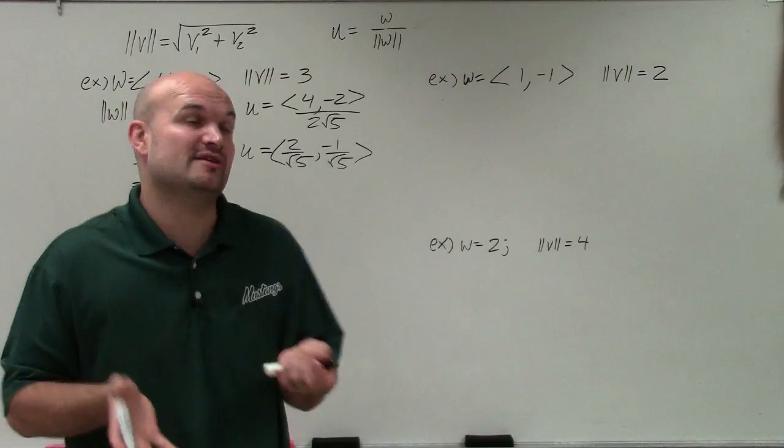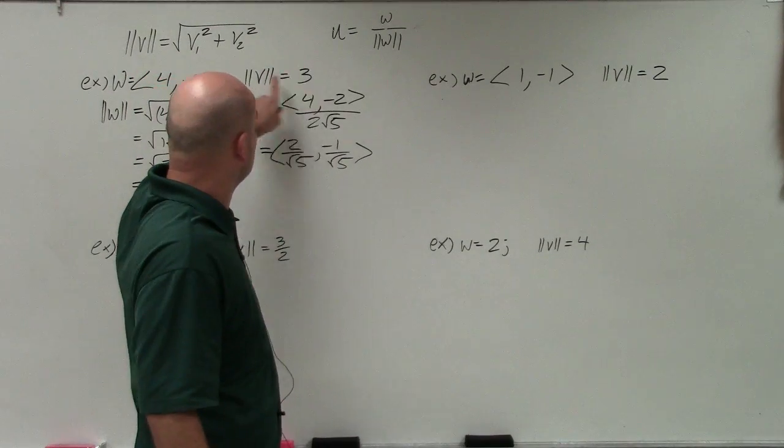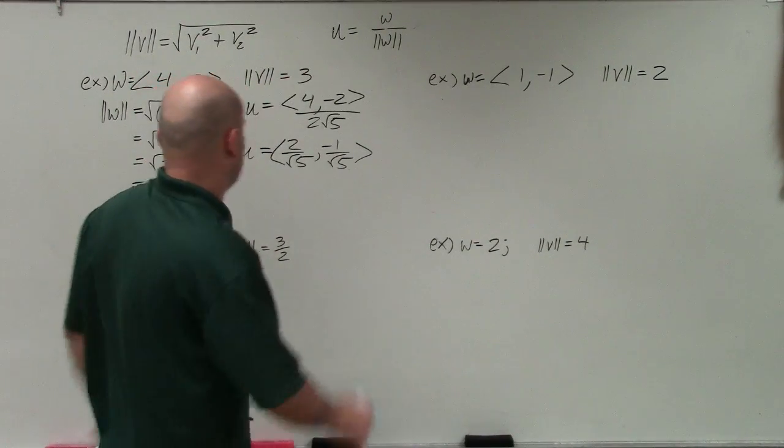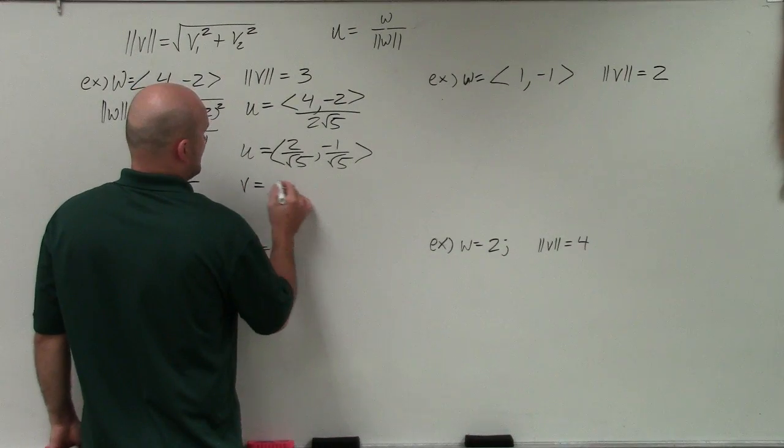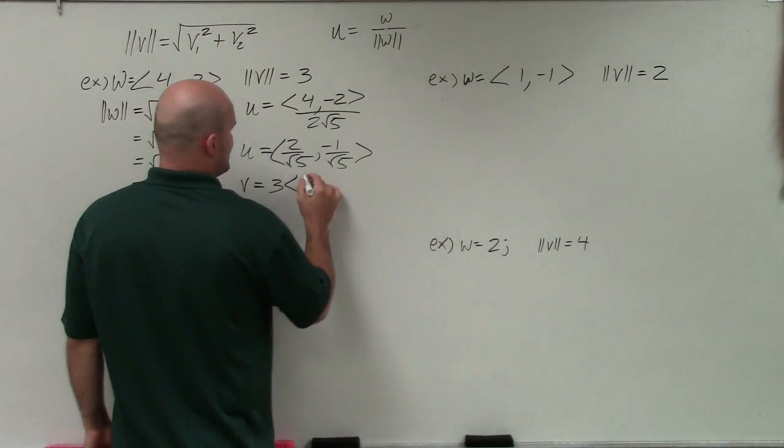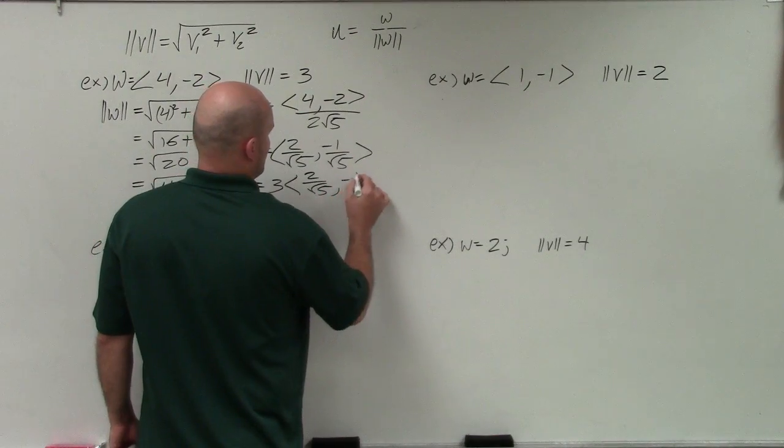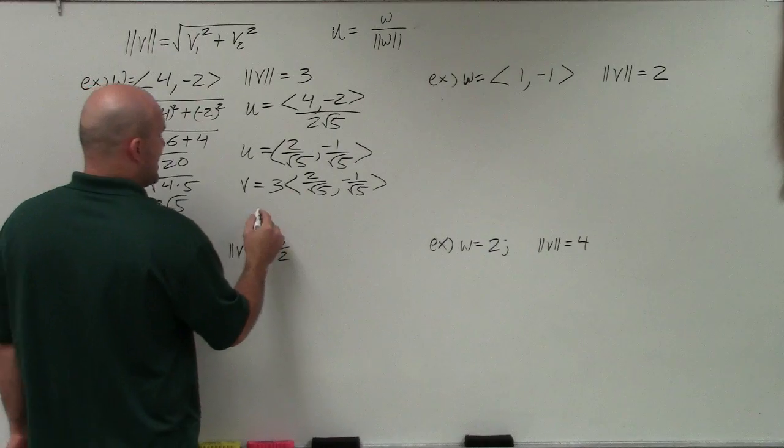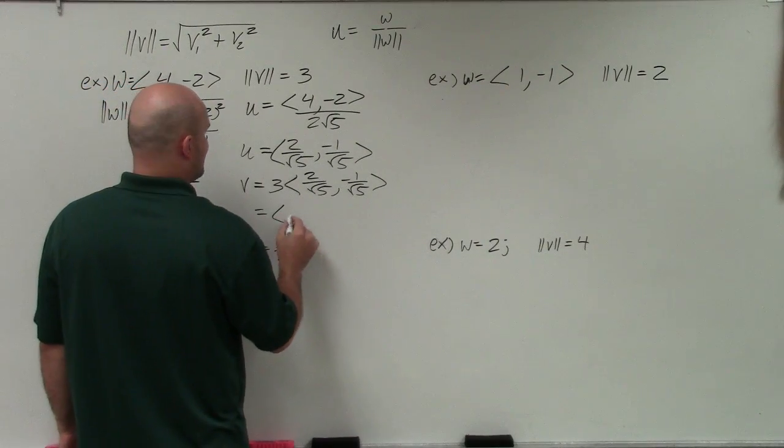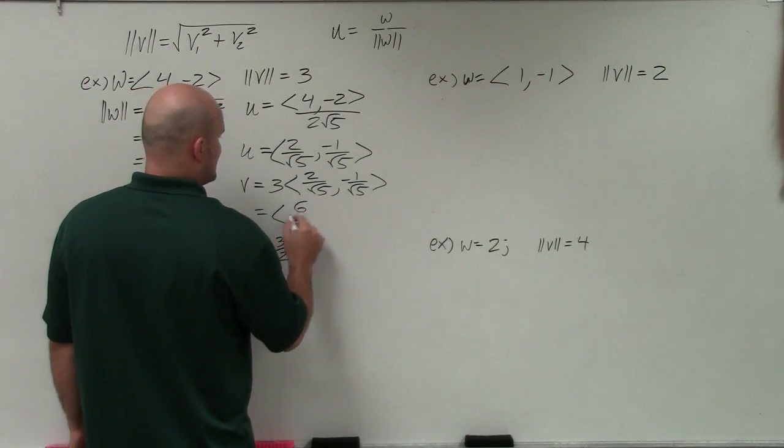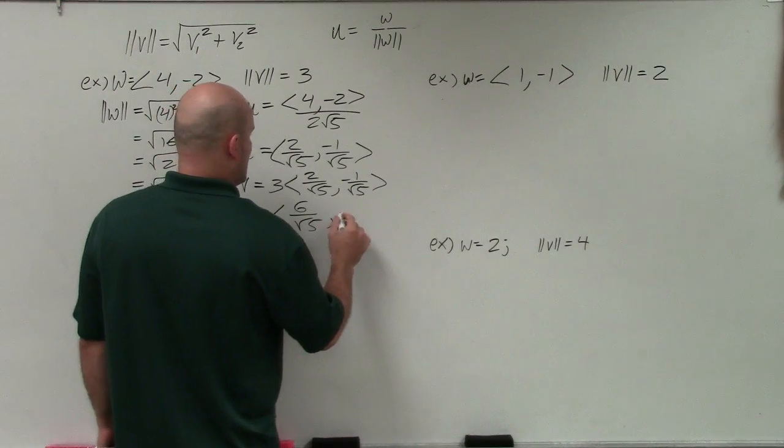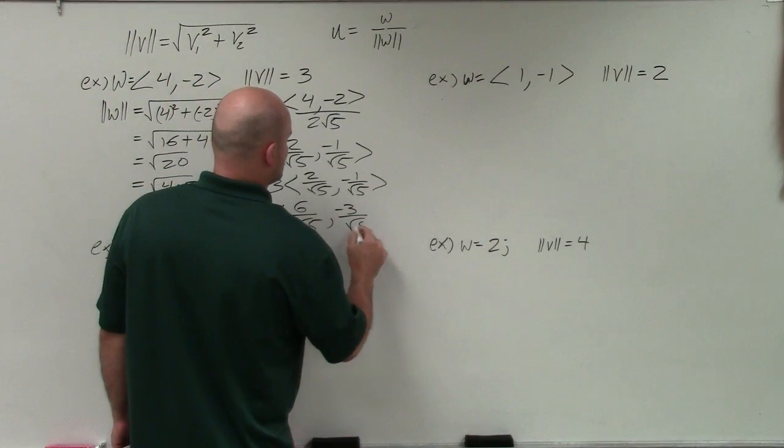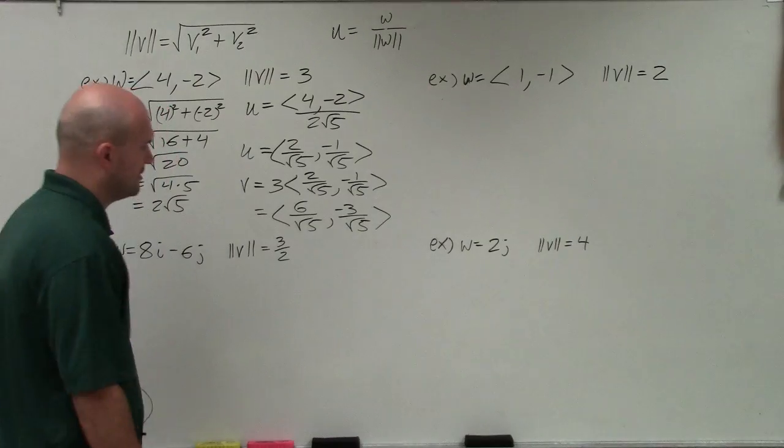However, I'm not trying to find the unit vector. I'm trying to find the vector v that has a magnitude of 3. So v is going to equal 3 times this unit vector. Then all I'm simply going to do is apply my operations with scalars, and I get my final vector v, which is 6 over the square root of 5 comma negative 3 over the square root of 5. Done.